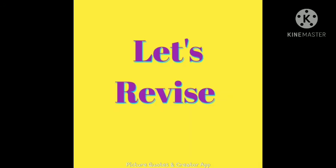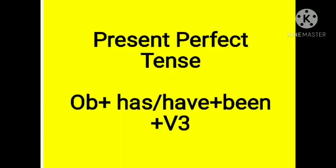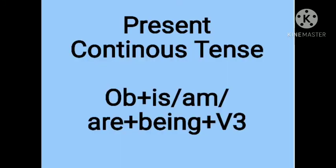Let's revise. Today we studied active and passive voice definitions. The formulas are as follows. For simple present tense: Object + is/am/are + Verb (third form). For present perfect tense: Object + has/have + been + Verb (third form). For present continuous tense: Object + is/am/are + being + Verb (third form). Keep in mind that verb's third form is common in all the formulas. In continuous tense, you have to add the word 'being' — be particular about it.